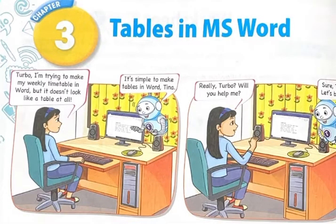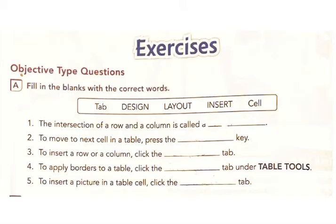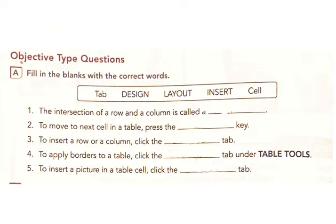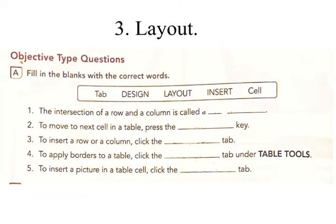Lesson 3: Tables in MS Word - Exercises. Section A: Fill in the blanks with the correct words. 1. The intersection of a row and a column in a table is called a cell. 2. To move to the next cell in a table, press the Tab key.